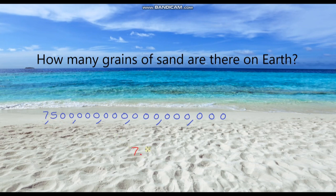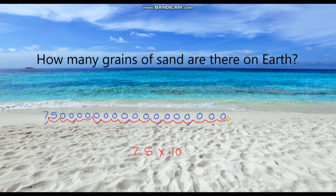So 7.5 is between 1 and 10, and then we multiply by 10 as always. Now we need to think about the power — how many times are we multiplying 7.5 by 10 to give us this number? I always put the decimal point in first and then count back. Counting along from the decimal point, we move it 18 times. So this number written in standard form is 7.5 × 10¹⁸.